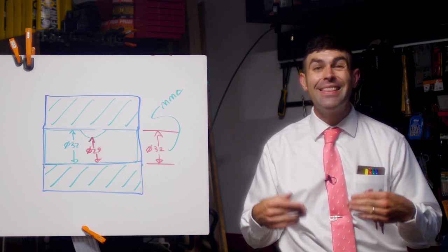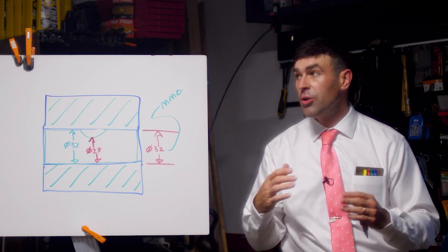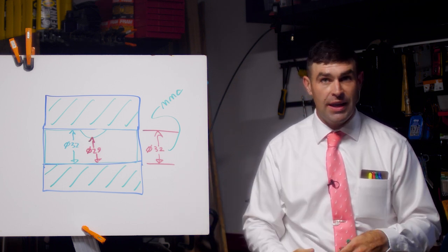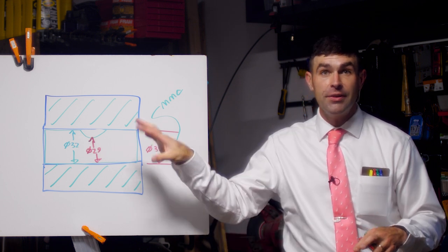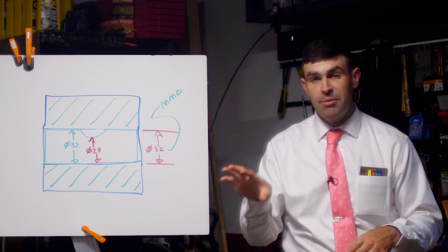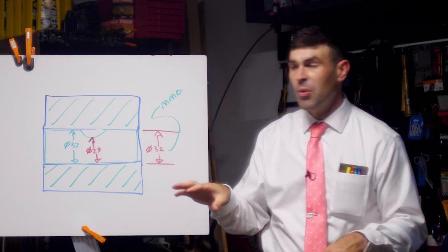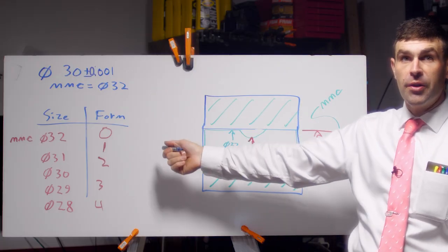And this is going to be the default requirement in Y14.5. So when you call it out on the drawing, you say, hey, we're using ASME Y14.5-2009, 2018, whatever. This comes along with it. If you don't want rule number one, and before I go into that, if I make this much, much smaller, so one micron, it's not only going to make the size smaller, it's going to evaporate our form tolerance as well.